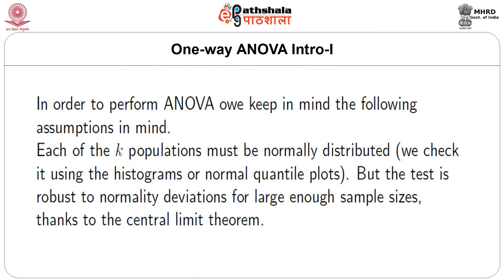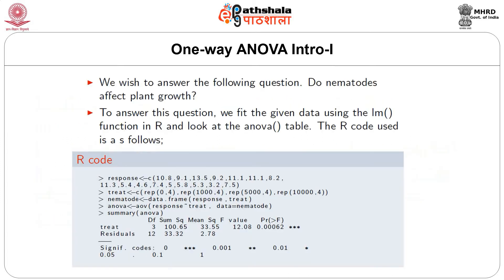In order to perform ANOVA, we keep in mind the following assumptions. Each of the k populations must be normally distributed — we check this using histograms or normal quantile plots — but the test is robust to normality deviations for large enough sample sizes, thanks to the central limit theorem. We wish to answer the question: do nematodes affect plant growth? You do not need to understand what nematodes are to do statistics — that is the beauty of statistics. We fit the given data using the lm function in R and look at the ANOVA table.